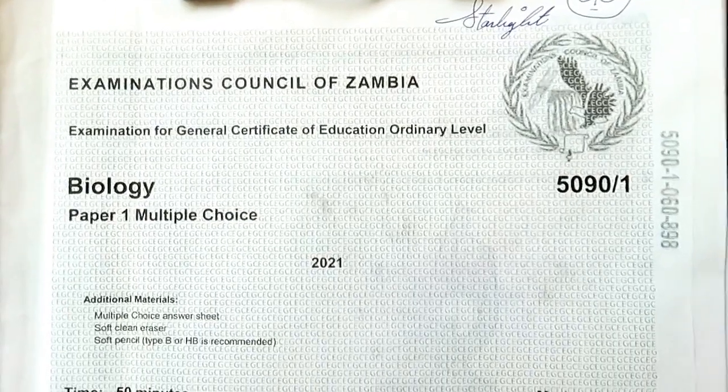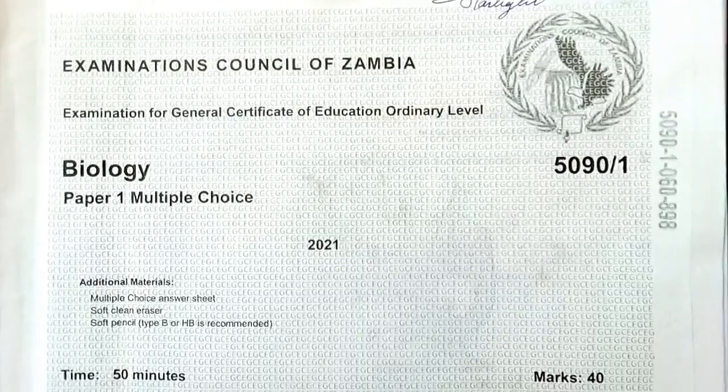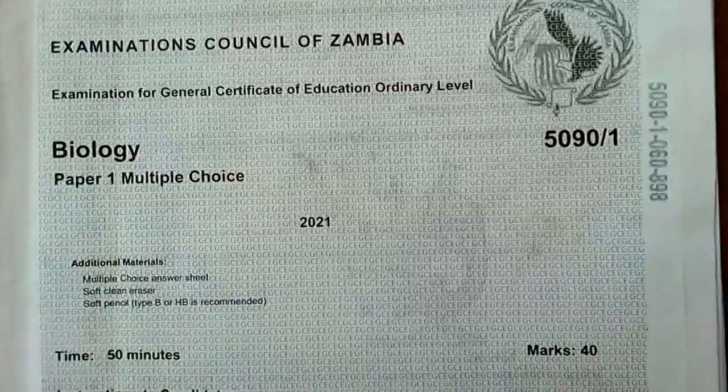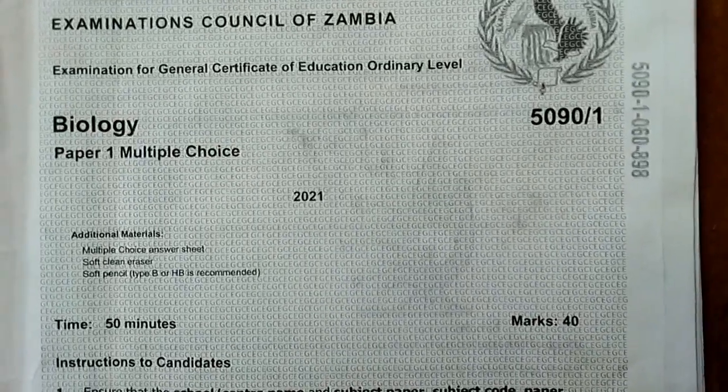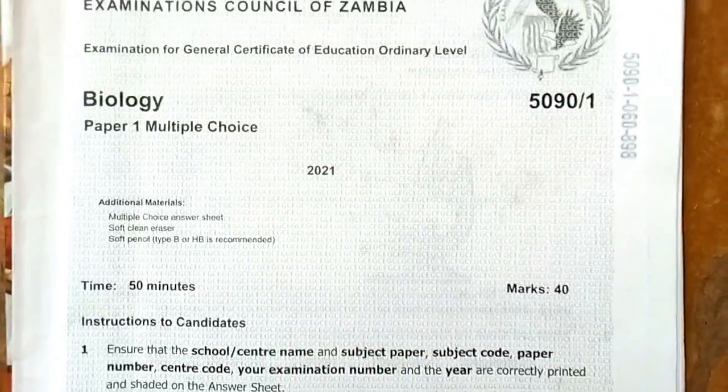Okay, this is a video in Biology Paper 1, GCE for the year 2021, multiple choice paper 1. I'll do this first part of question 1 to 20, then I'll do the second part of question 21 to 40. Let's go to question 1.